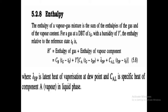Here, Ca and Cb are the specific heats of components A and B respectively. Ca is the specific heat of component A in the liquid phase. Tg is the gas temperature at dry bulb temperature, and T0 is the reference state temperature.